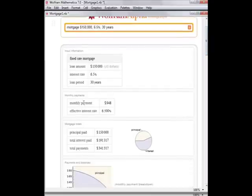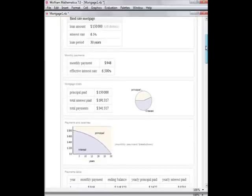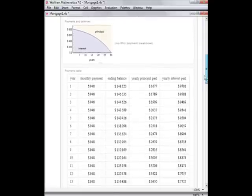It shows me my monthly payments, the mortgage totals. It gives me a nice pie chart to visualize the amount of principal versus interest I'll be paying and also that monthly breakdown to show me over the years, my 30-year loan, how much I'll be paying of interest versus principal. It then shows me that table too.